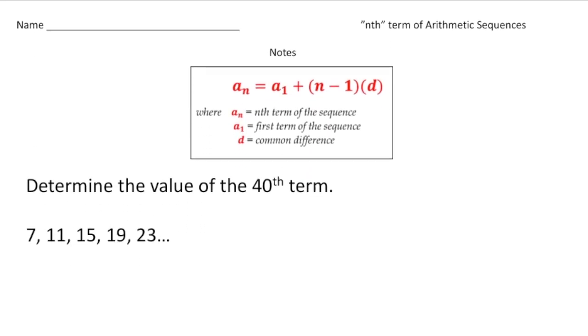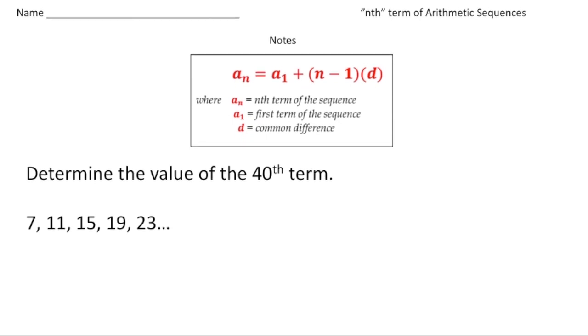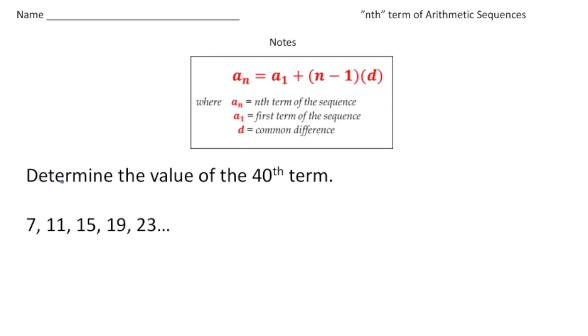Here we have the sequence 7, 11, 15, 19, and 23. So let's first identify all the key parts here. It looks like our common difference is going to be plus 4.